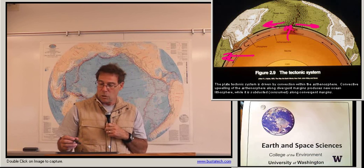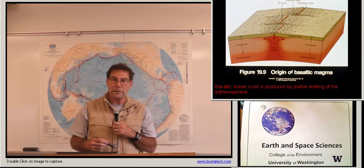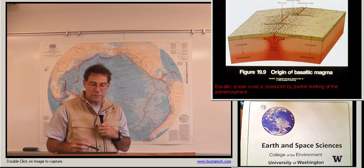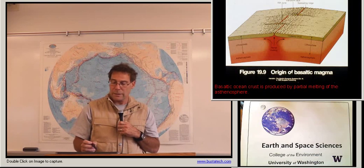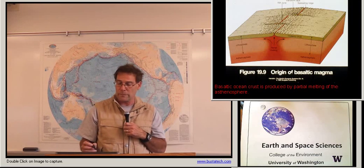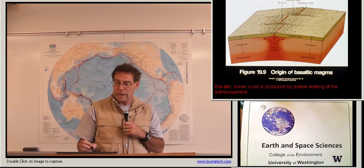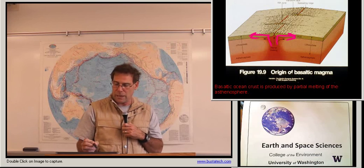I'd like to first address in detail the divergent margins and seafloor spreading. This slide shows very clearly that you've got partial melting occurring in the asthenosphere and new ocean lithosphere is created and diverges outward.